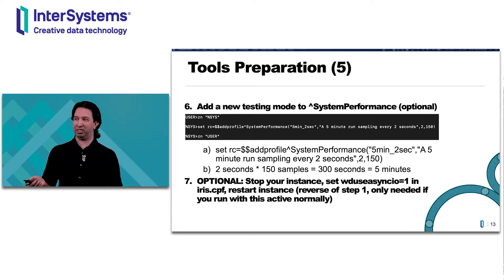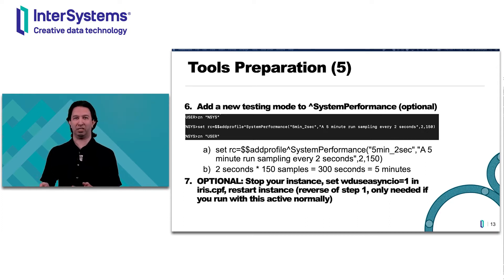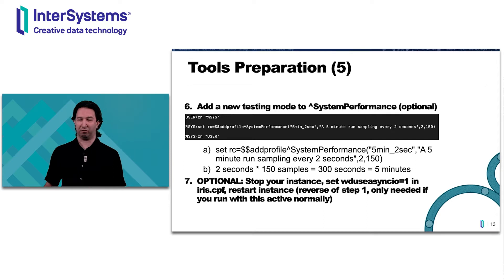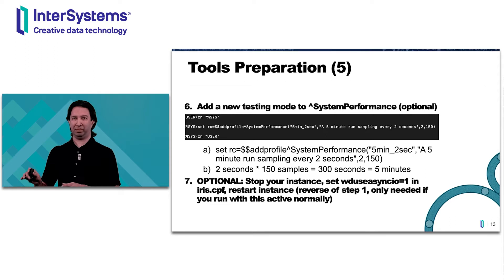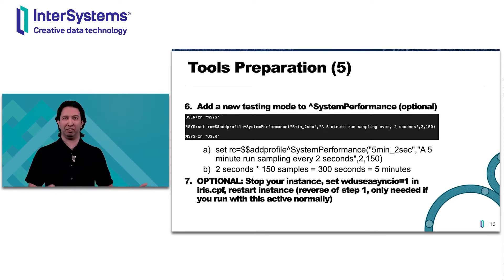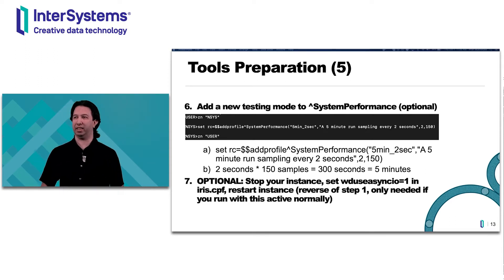If you want your WDSyncIO on and you had it on before, at this point you've got to stop IRIS, edit the CPF, and restart. You only want to do this if that's the way you're going to run your system once all testing is done — you want to test the system in the same condition you'd actually be running it.